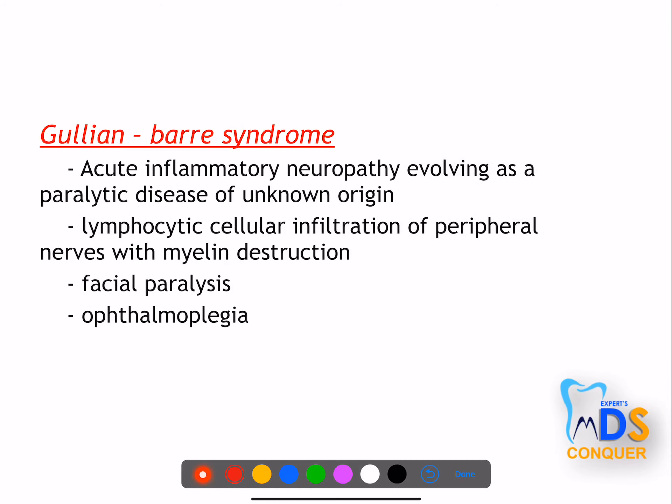Guillain-Barré syndrome involves acute inflammatory neuropathy evolving as a paralytic disease of unknown origin. It shows lymphocytic infiltration of the peripheral nerves, facial paralysis, and ophthalmoplegia. All these conditions fall under facial paralysis — so if asked which shows facial paralysis, the answers include Guillain-Barré syndrome, Möbius syndrome, and Ramsay Hunt syndrome.